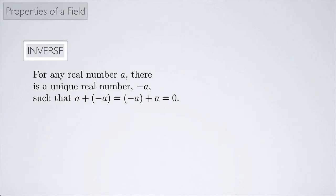Inverses. For any real number A, there is a unique real number, which we're going to call negative A, such that when you apply the binary operation of addition, we get back the identity, which in this case was 0. So 2 plus negative 2, that gives you back 0, the identity.